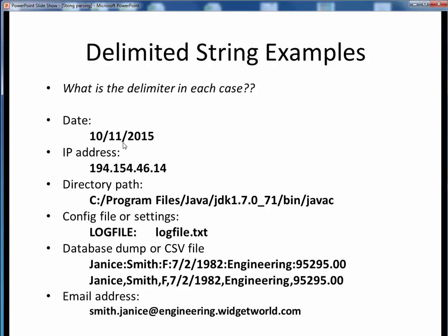In this date, the delimiter is the forward slash which separates the month, day, and year. For this IP address, the delimiter is a period which separates the various address fields. For this PC-like full directory path, the separator is again the forward slash which separates the different nested directory levels.